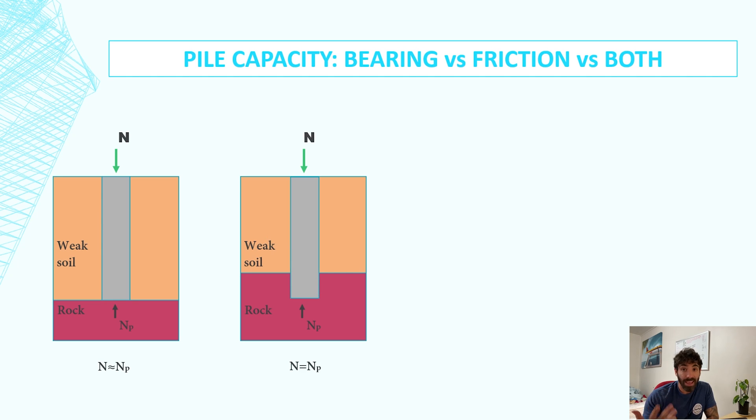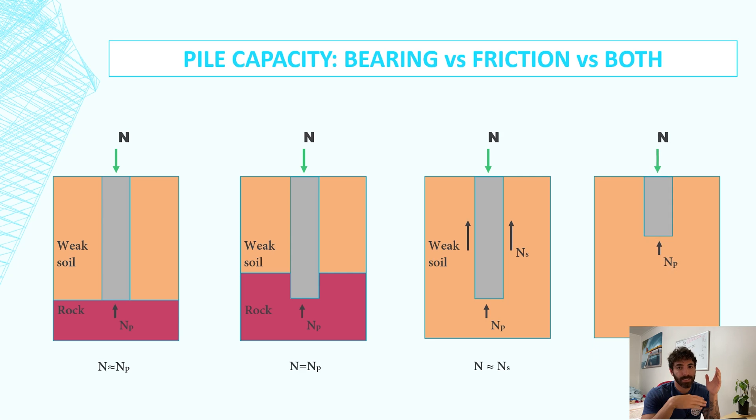On the other hand, if your pile is in weak soil, the sides will contribute a lot with the capacity, so the friction will do most of the work. Finally, in short piles, the base will do most of the work. In those bored piers you see in house footings, since they're a couple of meters long, friction will not do much.